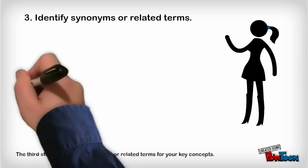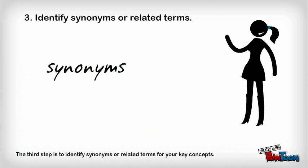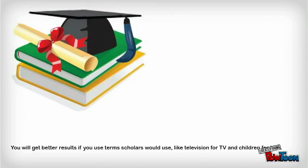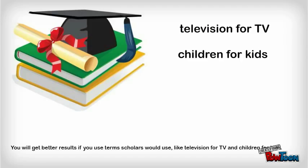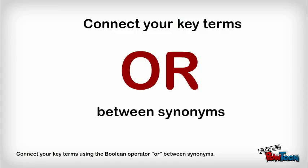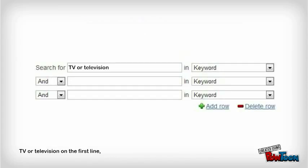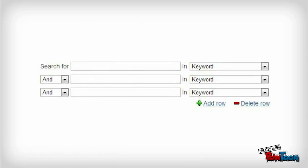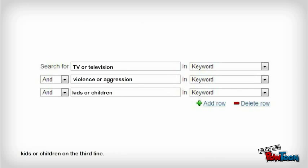The third step is to identify synonyms or related terms for your key concepts. You will get better results if you use terms scholars would use, like television for TV and children for kids. Connect your key terms using the Boolean operator OR between synonyms: TV or television on the first line, violence or aggression on the second line, kids or children on the third line.